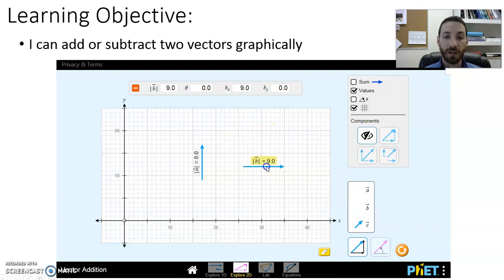If we have two vectors, vector a and b, we add them using what's called the tip-to-tail method. This is the tip of vector a and here is the tail of vector b. We add them tip-to-tail, we get the sum which we can find algebraically using Pythagorean theorem.